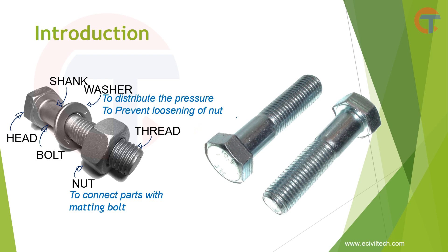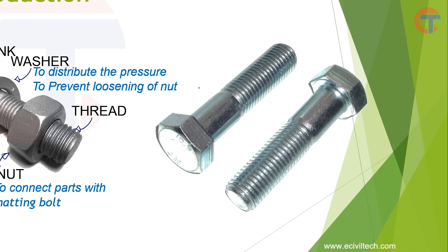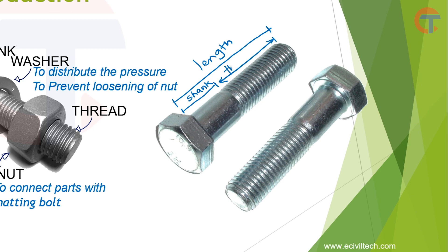Now let's check out some important parameters of the bolt. The length from just below the head of the bolt to the tip is called the nominal length — this is the length of the bolt. The length from just below the head to where the threaded part begins is called the shank length, and the threaded portion is called the threaded length. This is the nominal diameter of the bolt.